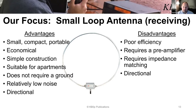The disadvantages of a loop: it's a very poor efficiency antenna for both transmit and receive, because you don't have a lot of surface area or metal. In order to make this a good receiving antenna, you usually have to put a preamp or some sort of amplifier to boost the signal. It also requires impedance matching because with such a short conductor — essentially a short circuit — it will have a very low impedance that needs to be bumped up to match your radio.